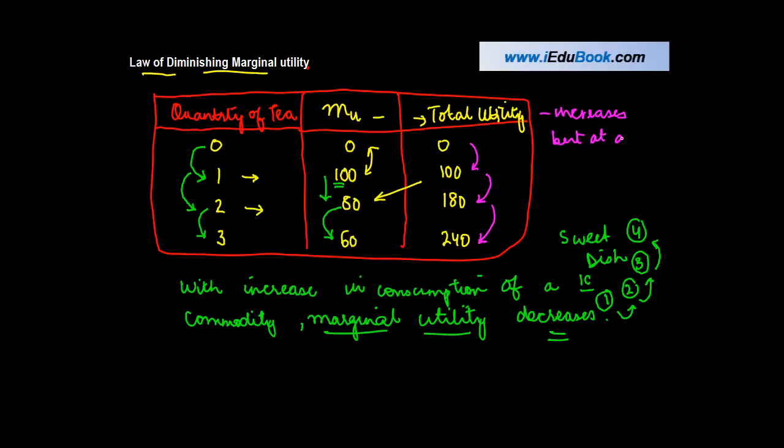But at a reduced rate. So if you see, the increase in total utility from 0 to 100 was 100, from 100 to 180 was 80, from 180 to 240 was 60. So it is increasing, but at a decreasing rate. This is what the law of diminishing marginal utility says. If you just read the heading itself, that will clarify this to you.